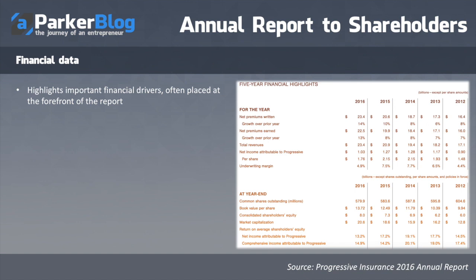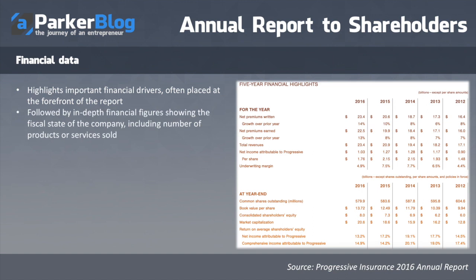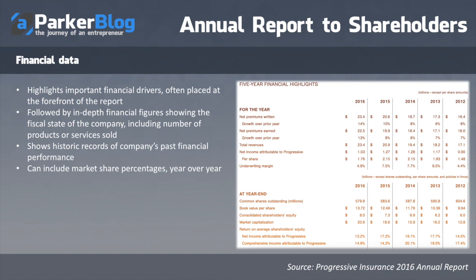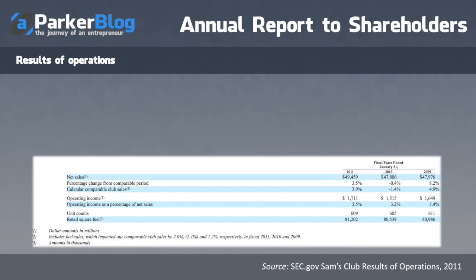Next is financial data. This includes highlights of the important financial drivers and is often placed right after the CEO letter. You'll see in-depth financial figures following some higher-level numbers — where did sales go up, where did market share increase — and then a more granular breakdown below. There's also a historic record of trends from the company's past financial performance, including market share percentage year over year, sometimes going back two, five, or ten years.